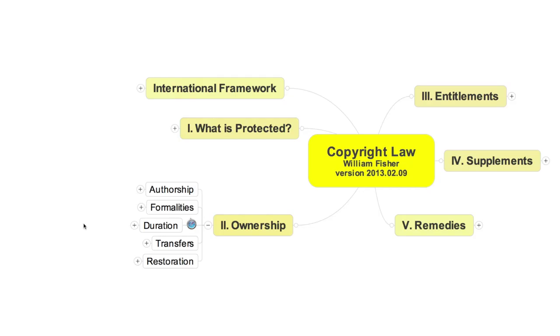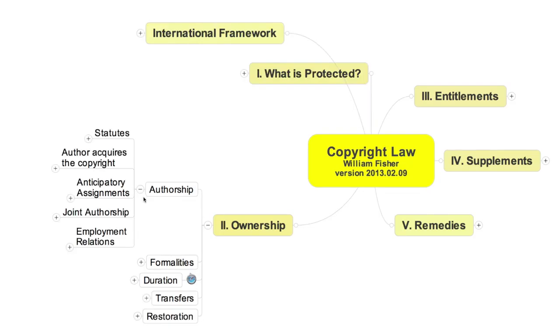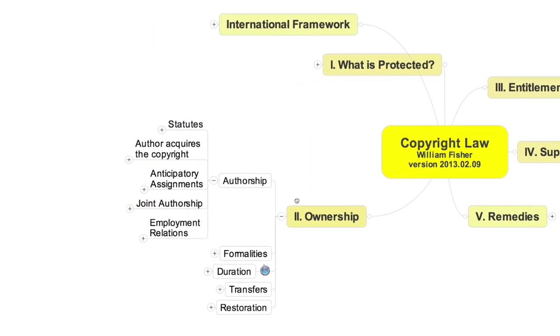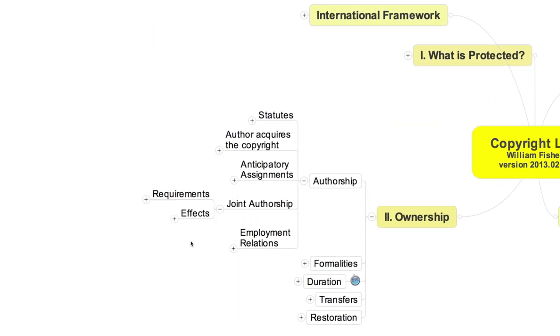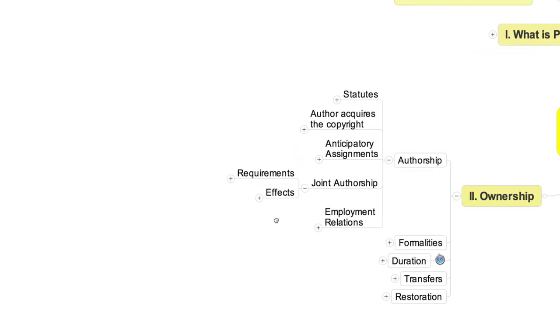The previous segment of this lecture examined the rules that determine which among competing claimants is the author of a copyrighted work. But occasionally more than one person can claim to have contributed enough to a work to be called an author, and thus to share in the copyright. The legal condition that arises under such circumstances is known as joint authorship. It doesn't happen very often, but when it occurs, it has some important effects.